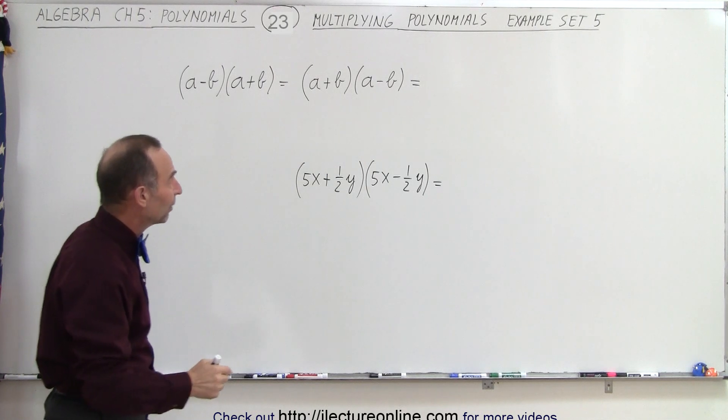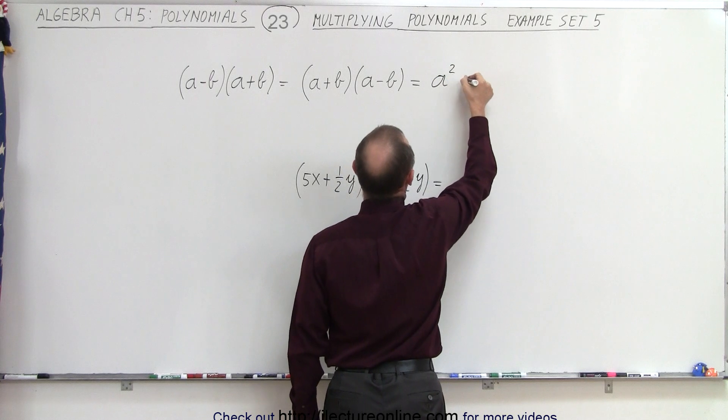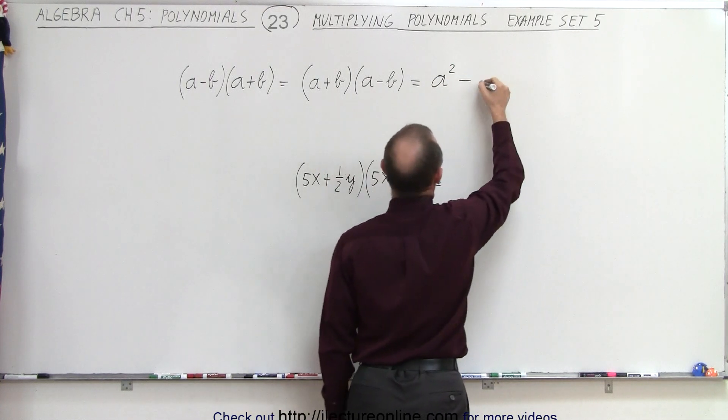So the rule is that you take the first term squared, put a minus in between, and then you take the last term squared.